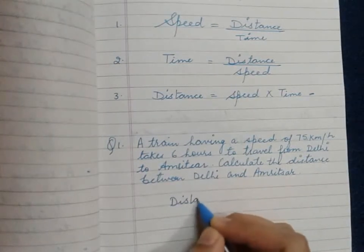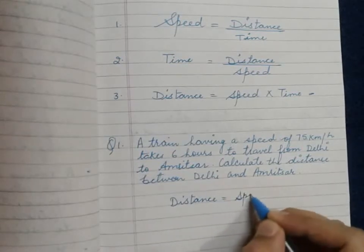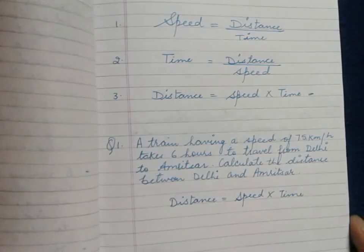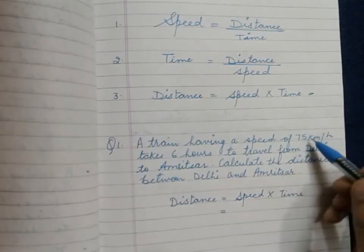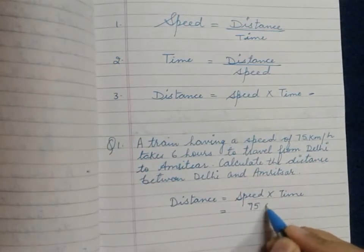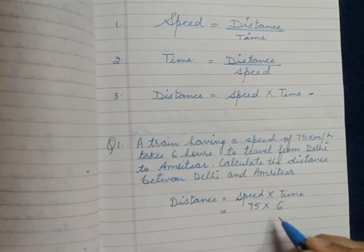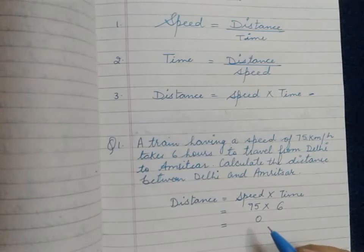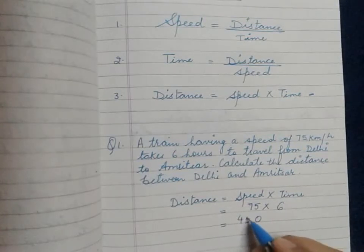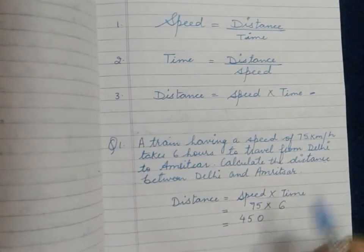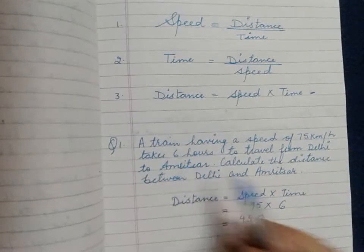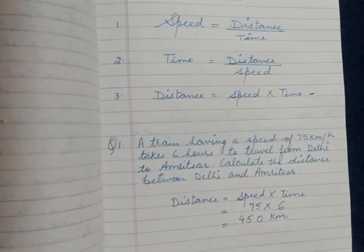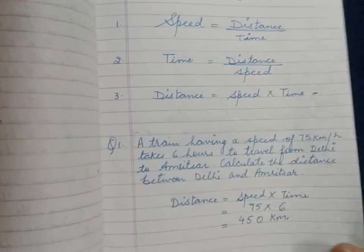We write: distance is equal to speed into time. After writing the formula, we substitute the values — speed was 75, so here it is 75, and time was 6 hours. The answer will be 75 into 6, which is equal to 450. Because speed was in kilometers per hour and time was in hours, distance will be in kilometers. This was all that was to be done in this numerical.